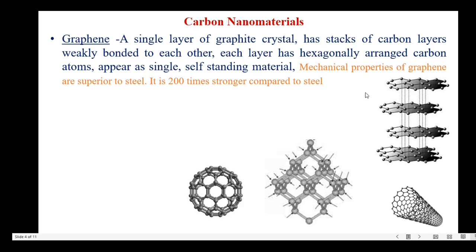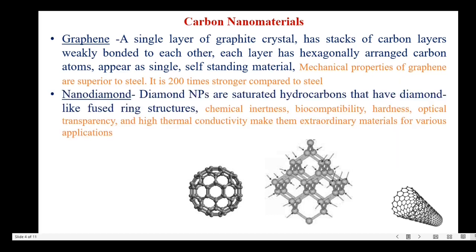The mechanical properties of graphene are superior to steel — it is 200 times stronger compared to steel. The next one is nano diamond. Nano diamond, or diamond nanoparticles, are composed of saturated hydrocarbons that have diamond-like fused rail structures. Because of chemical inertness, biocompatibility, hardness, optical transparency, and high thermal conductivity, these materials find more applications in various fields.